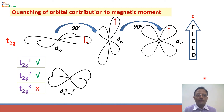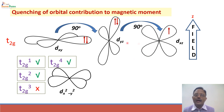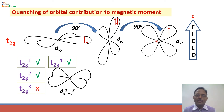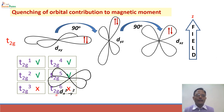For T2G⁴, there are two electrons in one orbital, and transformation into another orbital leads to more electrons along the Z direction, so it contributes to magnetic moment. Similarly T2G⁵ can transform such that four electrons have Z component instead of three, so it also has orbital contribution. But T2G⁶ cannot have orbital contribution because transformation cannot increase the number of electrons with Z component. Therefore, orbital motion is quenched in T2G³ and T2G⁶ complexes. In other words, if T2G orbitals are unsymmetrically filled there is orbital contribution; if symmetrically filled, the orbital motion is quenched.